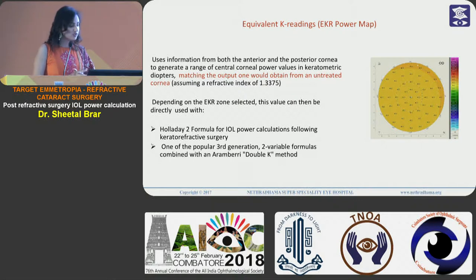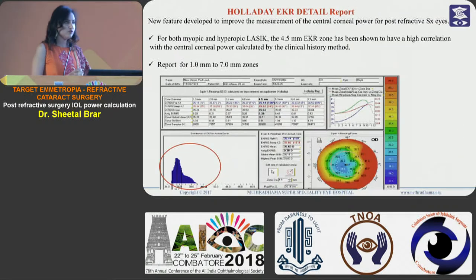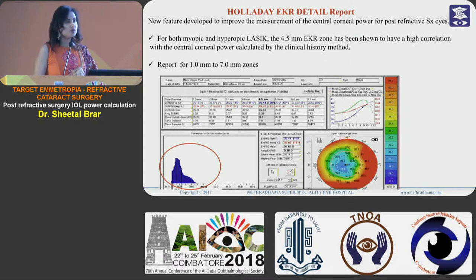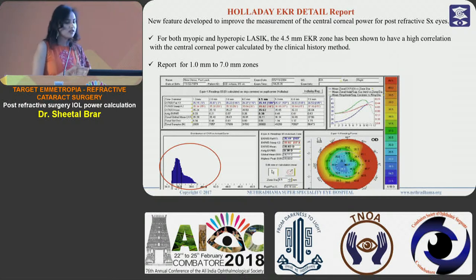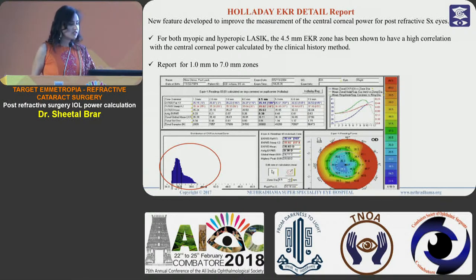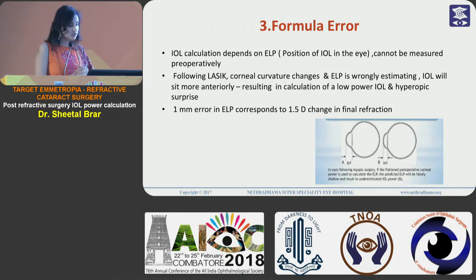Depending on the EKR zone selected, this value can be used with any modern third or fourth generation formula. The Holladay EKR detail report is a new feature developed to improve measurement of central corneal power post-refractive surgery. It was found that for both myopic and hyperopic cases, the 4.5 mm EKR zone showed the highest correlation with the central corneal power calculated using the clinical history method — the gold standard. This report provides EKR values from 1 mm to 7 mm zone, and traditionally we use the 4.5 mm zone values for IOL power calculation.